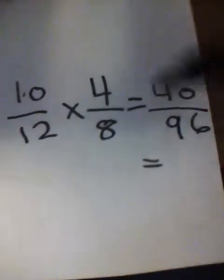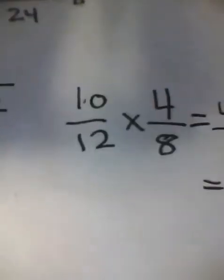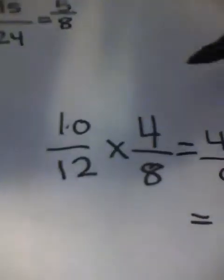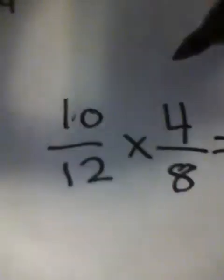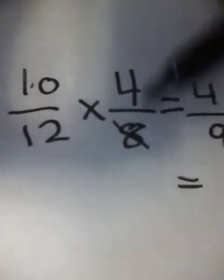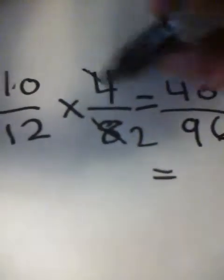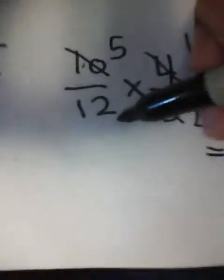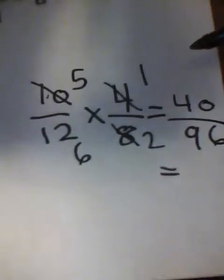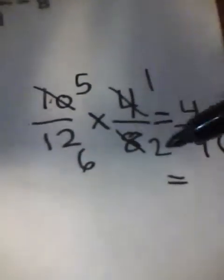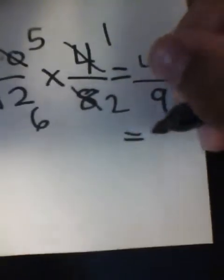Now I'll also show you the canceling method for this one — canceling is faster. 8 and 4 are both divisible by 4, so 8 divided by 4 equals 2 and 4 divided by 4 equals 1. 10 and 12 are both divisible by 2, so 10 divided by 2 equals 5 and 12 divided by 2 equals 6. Now multiply them: 5 times 1 and 6 times 2, and that's your answer.